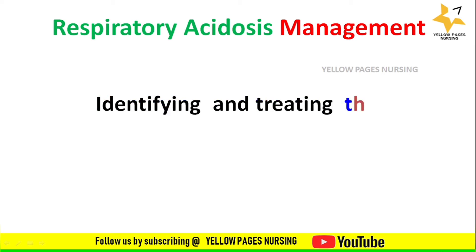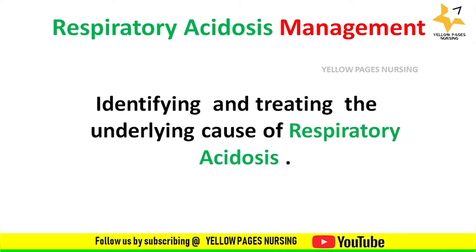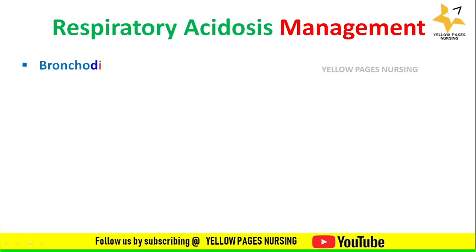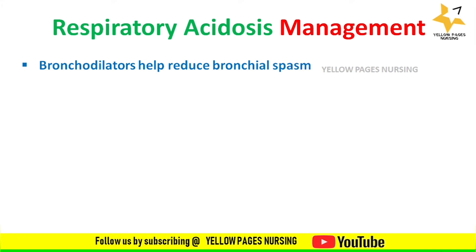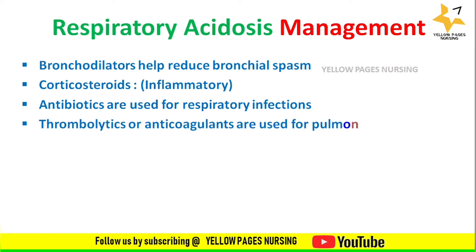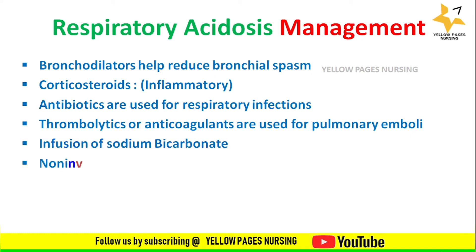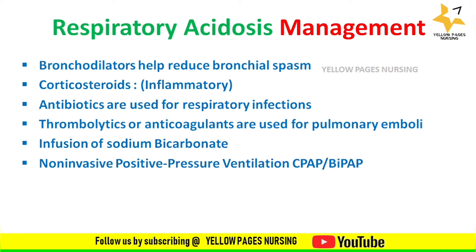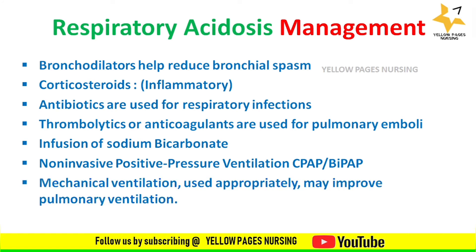Management of respiratory acidosis focuses on identifying and treating the underlying cause. Measures include administration of bronchodilators to reduce bronchial spasm, anti-inflammatory corticosteroids, antibiotics for respiratory infections, thrombolytics or anticoagulants for pulmonary emboli, infusion of sodium bicarbonate, non-invasive positive pressure ventilation such as CPAP or BiPAP, and mechanical ventilation used appropriately to improve pulmonary ventilation.